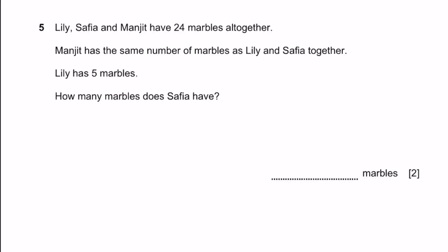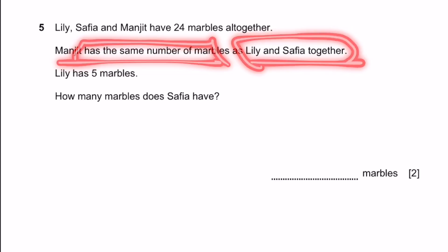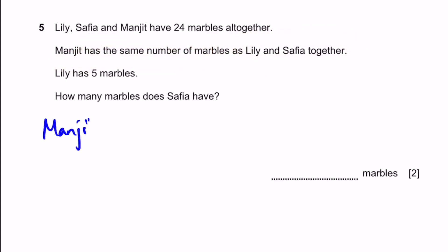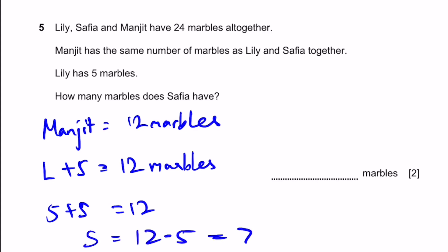Question 5. Lily, Safiya, and Manjit have 24 marbles altogether. Manjit has the same number of marbles as Lily and Safiya together. Lily has 5 marbles. How many marbles does Safiya have? If Manjit has the same number as the other two together, that means Manjit equals 12 marbles, because that is 24 divided by 2. Lily plus Safiya also equals 12 marbles. Since Lily is 5, 5 plus S equals 12, so S equals 7 marbles.